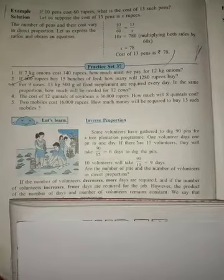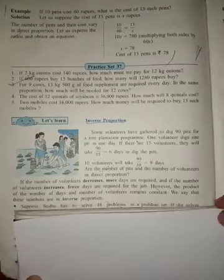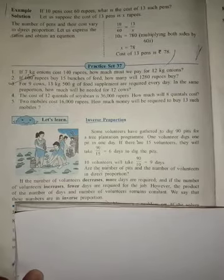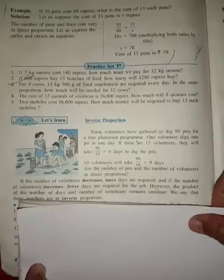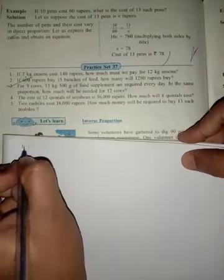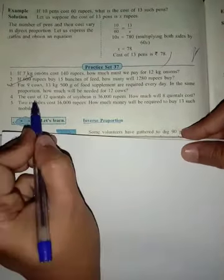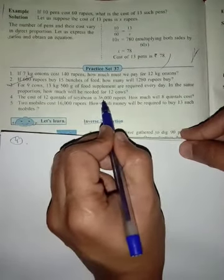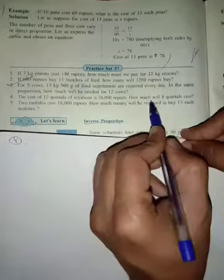Hello students, in this video we are going to solve Practice Set 37, questions 4 and 5. Question number 4 is: The cost of 12 quintals of soybean is 36,000 rupees, so how much will 8 quintals cost?